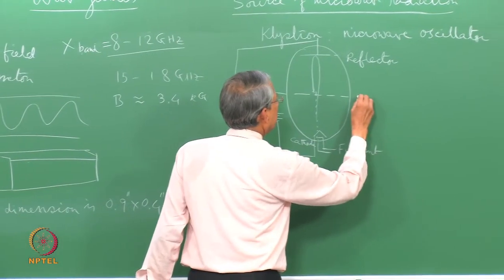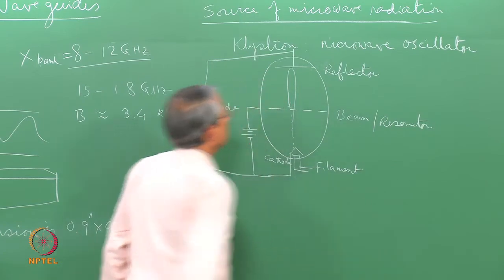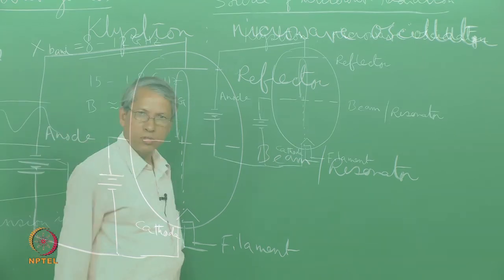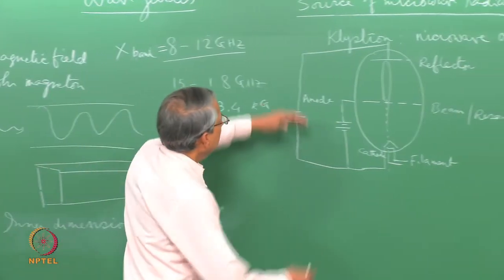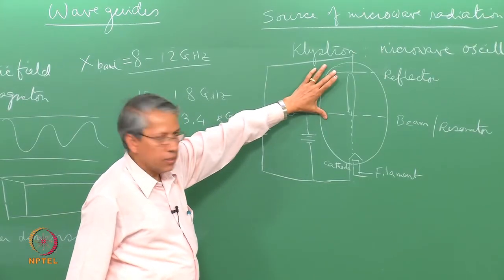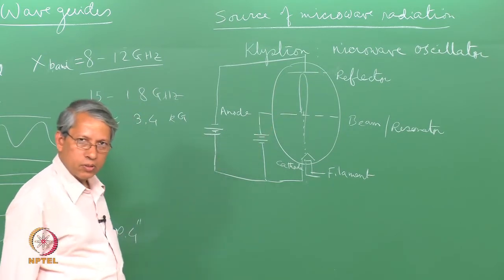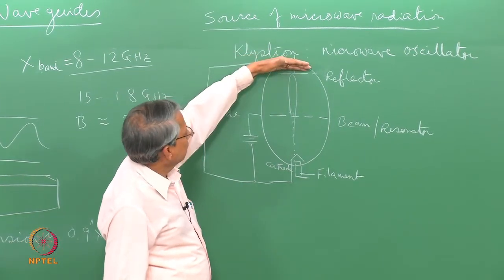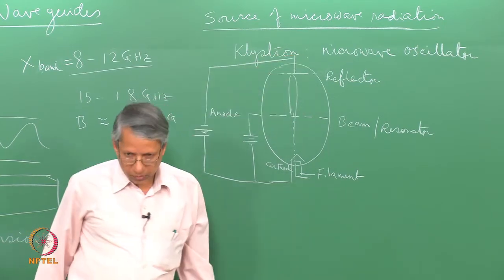The frequency of oscillation in the klystron decides the frequency of the microwave output. To change the frequency, one can change the physical distance between the beam and the reflector — that changes the transit time of the electron and thus the frequency. The frequency can also be changed by changing the reflector voltage: increasing or decreasing it alters the transit time and hence the oscillation frequency.